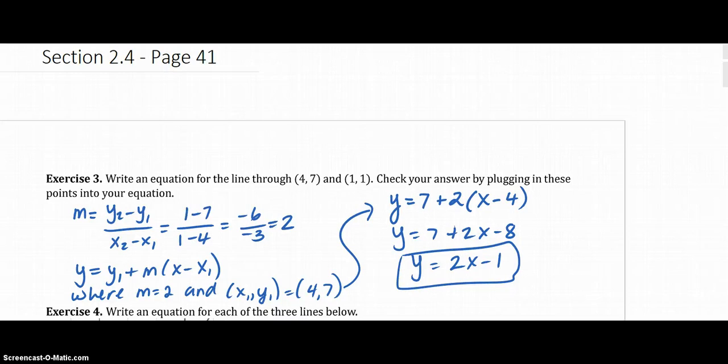Here is the solution. So what I did here is I used the slope formula, where the first point is (4, 7) and the second point is (1, 1). Yep, because we went 1 minus 7 and 1 minus 4. And we got the slope as 2.